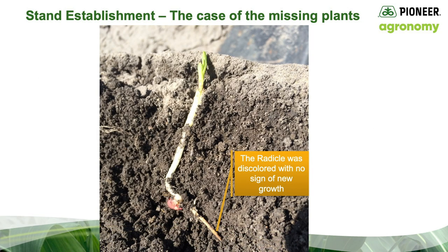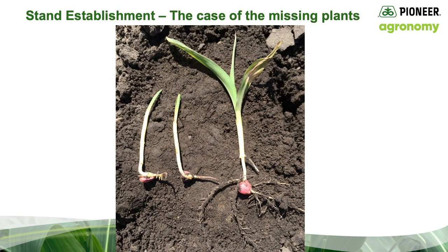As I dug into the soil to examine the roots, here's what I found. Soil conditions for these seeds were outstanding — there was no sidewall compaction. However, the roots were not in good shape. Notice the dark discoloration of the radicle root on the stunted plants. There should have been a robust white root system growing rapidly in this loose, tilthy soil. As I continued to dig, it was clear that the roots of the stunted plants were not healthy. It was helpful to dig a healthy plant to make some visual comparisons.